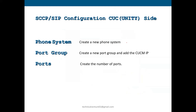On the Unity side, the SCCP and SIP configuration is almost the same. You need to create a phone system for both integration types. Then create port groups and add the CUCM IPs — first the publisher, then subscriber IPs if needed. Then create the required number of ports. The one difference is when configuring the port group: it will ask whether you are using SCCP or SIP integration, and you choose accordingly.